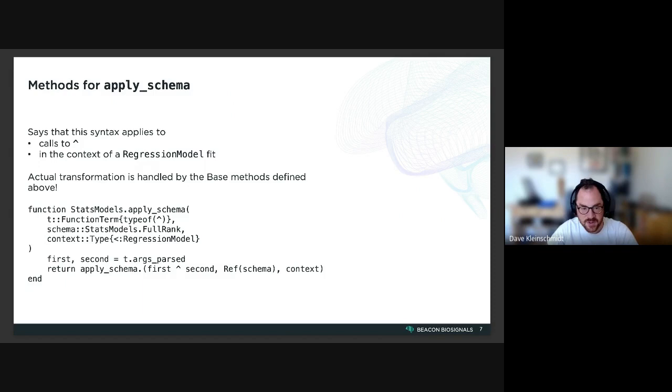And what this function actually does is pretty light. All it does is it pulls out the parsed arguments from the function term. So the first and the second argument are the terms to be exponentiated and the degree of the exponentiation.